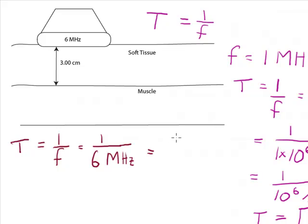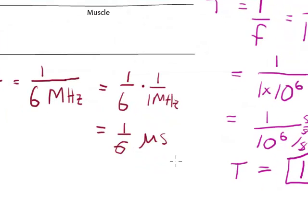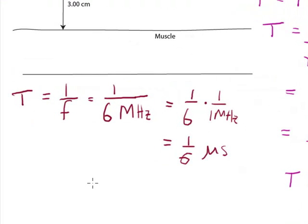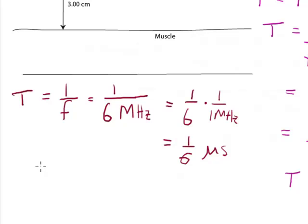And I know that I could write this out as the full number, or I'm going to do this both ways. So first of all, let's look at what this is. So I'm going to say this is 1 sixth, and I know that 1 over megahertz, 1 over 1 megahertz here, is going to be 1 microsecond. So this is 1 sixth of a microsecond.